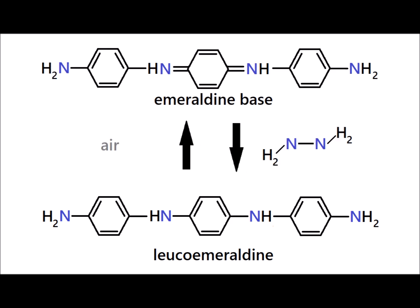Most typical synthesis methods generate the poly- or oligoaniline in the leucoemeraldine form — the most reduced form. However, this form is not stable to oxygen in the air and oxidizes very easily to the emeraldine base form. If you store leucoemeraldine under a nitrogen atmosphere, it will stay in the leucoemeraldine form almost indefinitely.